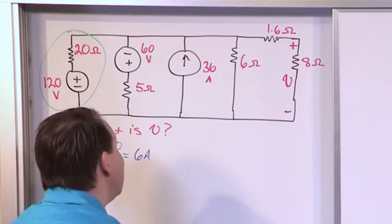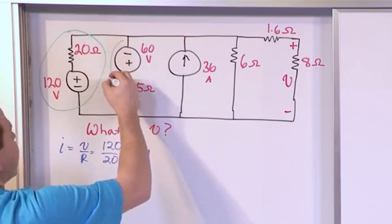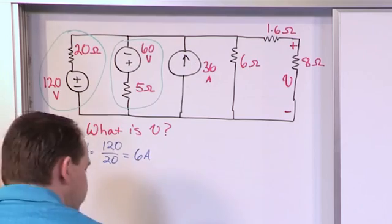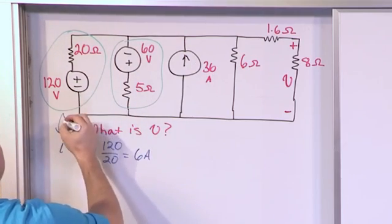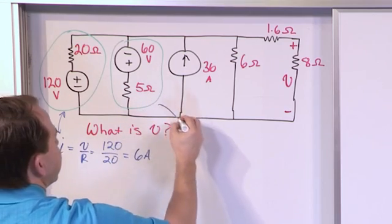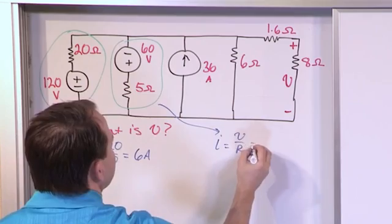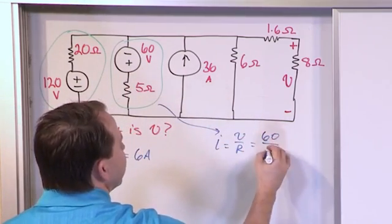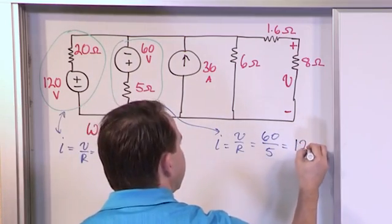Now just to save a tiny bit of time, I also notice right away that I can do the exact same thing here. So to do this guy over here, I is V over R. The voltage is 60, the resistance is 5, so 60 divided by 5 is going to be 12 amps. So those two I know I can do, and I'm just going to do those first and then we'll see where we end up.